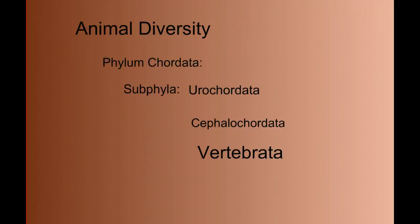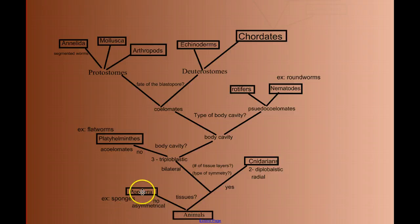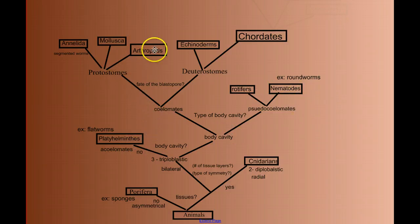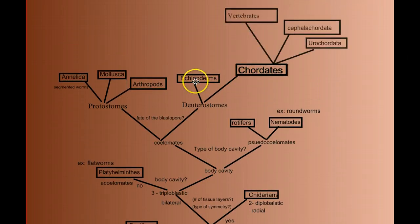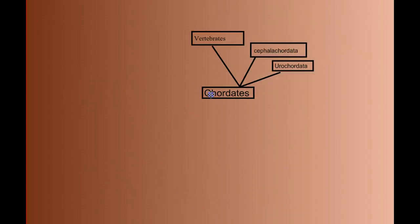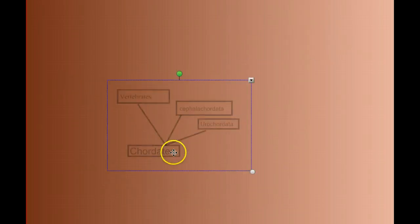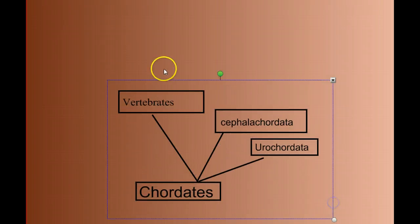Welcome to our first video in our series on vertebrate diversity. In our last series of videos, we worked our way up through the invertebrate animals, from the sponges, to the jellyfish, to the flatworms, to the roundworms, through our protostome branch, and then we ended with our deuterostome branch and ended with a brief discussion on chordates. In this series of videos, we're going to focus in on the chordate phylum, and more specifically, in greater detail, on the vertebrate subphylum.